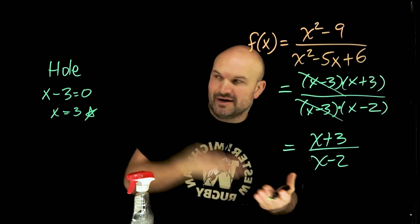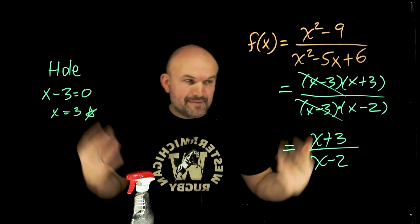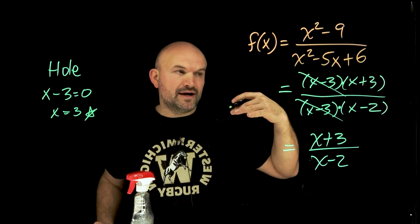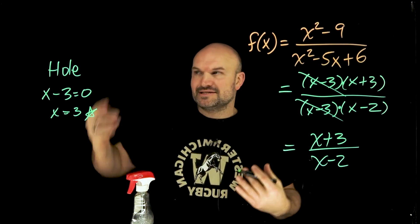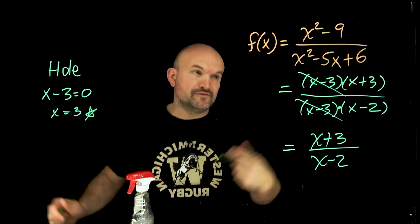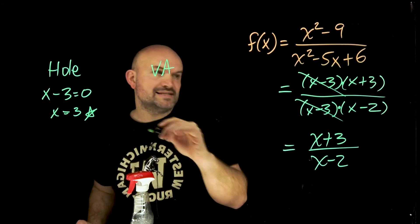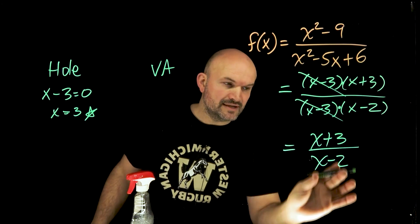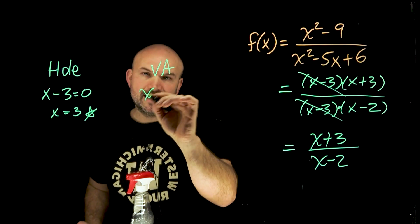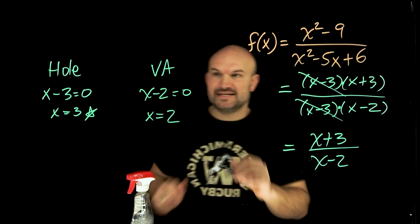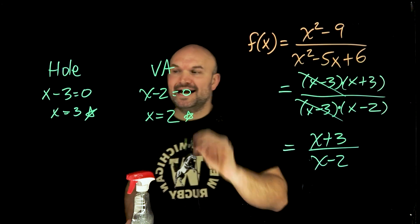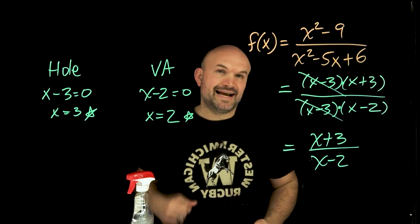Now, again, you could probably just do that in your head. You don't really need to set the expression, but it happens so many times as students, I don't know if they are not fully understanding it or if they just kind of make a mental error, but they'll always constantly say like the hole is at negative three and the vertical asymptote is at negative two. No, take your non-removable expression x minus two, set it equal to zero and x is equal to two. Now you can see we have a vertical asymptote at x equals two and a hole at x equals three.